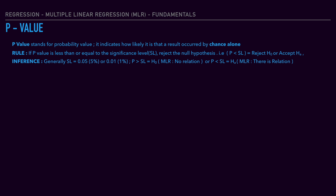If the P-value is less than or equal to the significance level, then we need to reject the null hypothesis. If it is greater than the significance level, then we need to accept the alternative hypothesis. In general, the significance level is 0.05, or 5 percent.